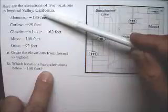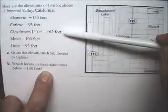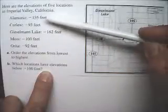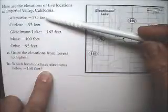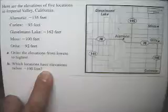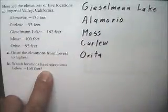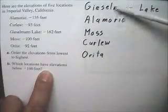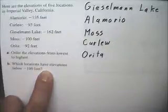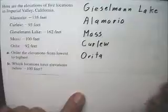All of these places are below sea level, so the lowest one is Gesellman Lake — it's the most below sea level. Next comes Alomarillo, then Moss, then Curlew, and lastly Orito is the highest. This is the places in order from lowest to highest.